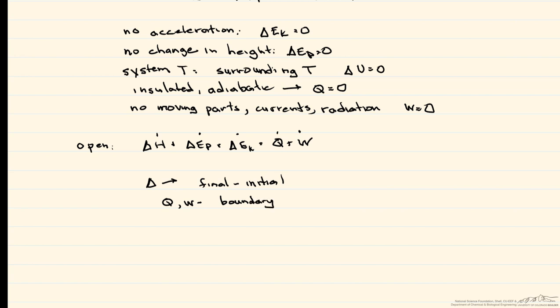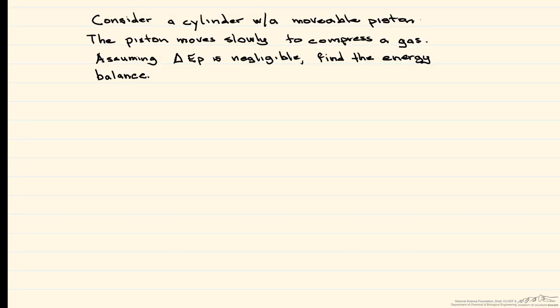Let's look at an example. We have a cylinder with a movable piston that moves slowly, compressing a gas. We assume that the change in potential energy is negligible. First, we ask: is this a closed or open system? It's a closed system, because no mass crosses the boundary of the system — the cylinder is the system. Is there a change in kinetic energy? The cylinder doesn't move, so we have no kinetic energy.